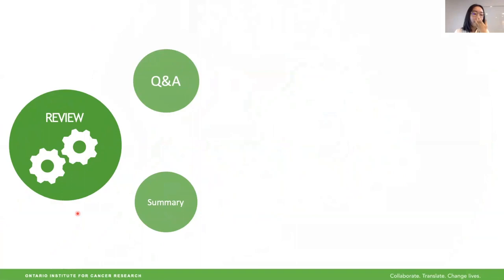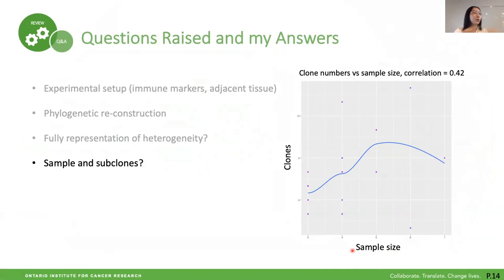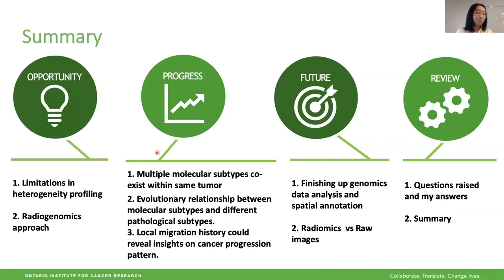In the review section, I'd like to highlight one question I was asked: should we expect more subclones if we took more samples or made more tumor nodules from a patient? I tried to visualize this as a correlation plot, and it doesn't seem to have a high correlation, so we're fine with that — because some patients have many tumor nodules and some don't. That's basically all of my presentation.